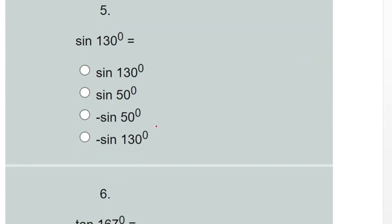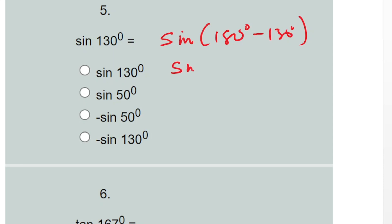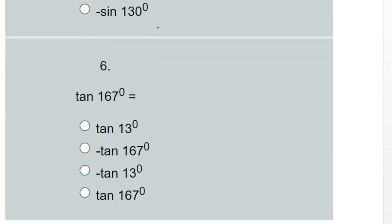Question five: sin 130 degrees. 130 degrees is in the second quadrant, and sine is positive in the second quadrant. So the answer is sin(180° − 130°), which gives sin 50 degrees. That is option B.